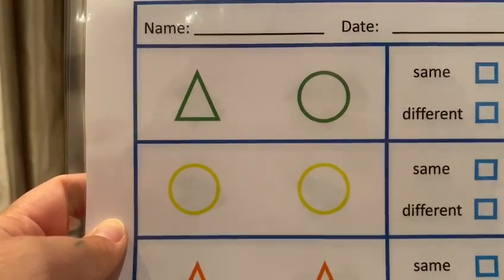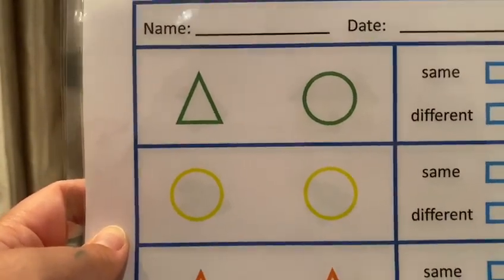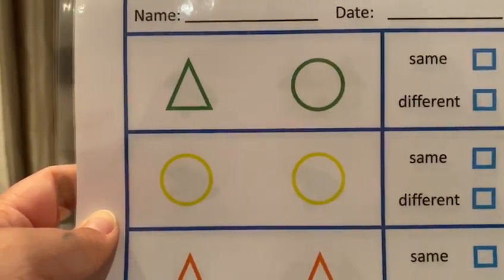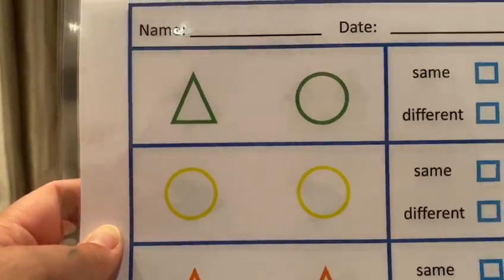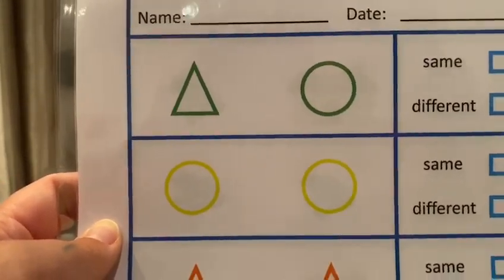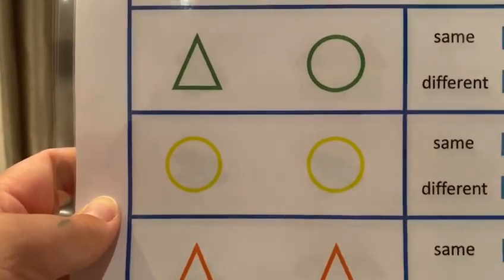Today I'm going to be using these worksheets for an activity with Ashton. The goal for this activity is to be able to identify if the things are the same or different.